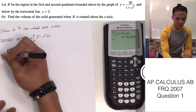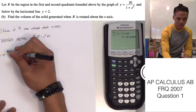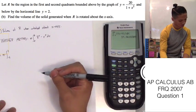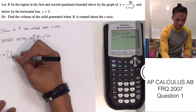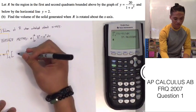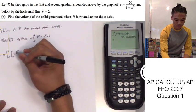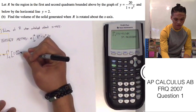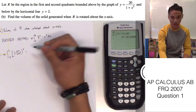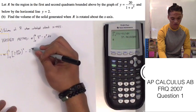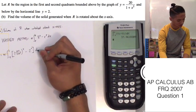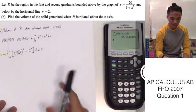So, it's going to be pi from negative 3 to 3 of our outer radius, which is our top function, squared. So, we're going to have to do 20 over all of 1 plus x squared, squared, minus our bottom function, which is 2, square that, and all of this is with respects to x.